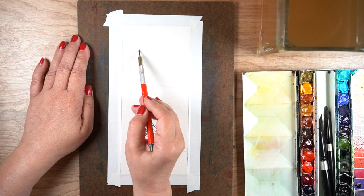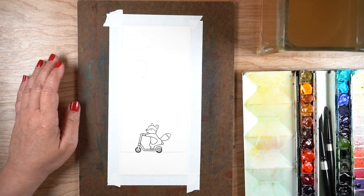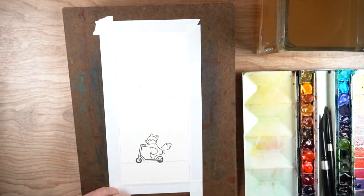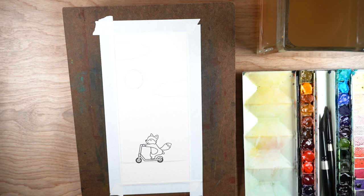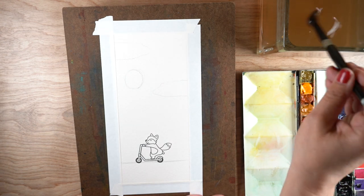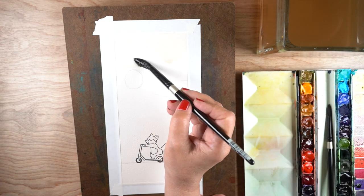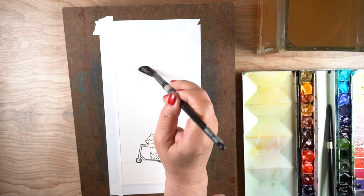I've sketched in a circle for my sun, some funky shapes for my clouds, and the horizon line. I'll tip up the board so I get gravity working in my favor. I do have white tape that I've been using instead of green or blue tape.